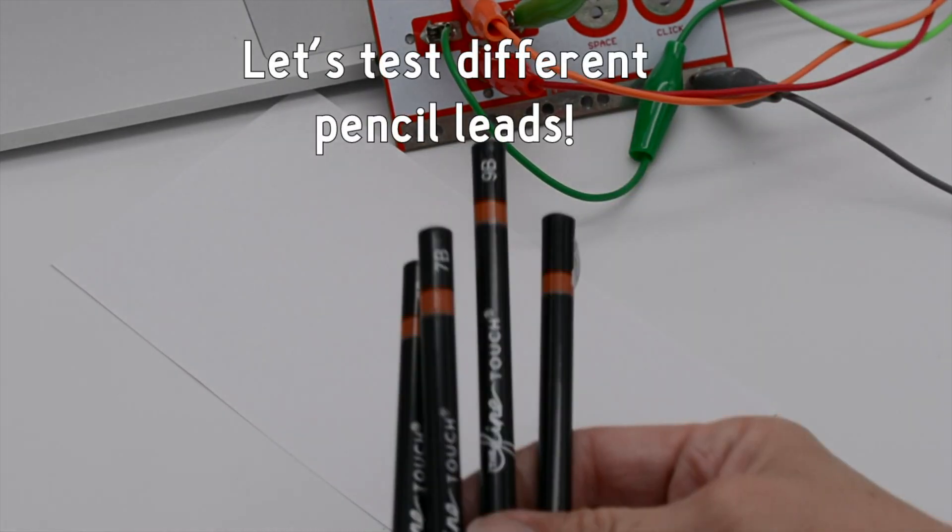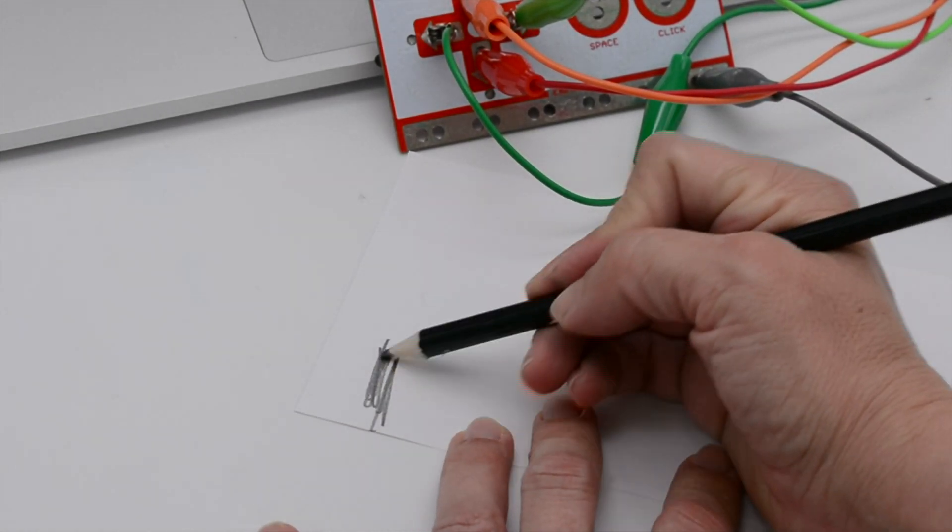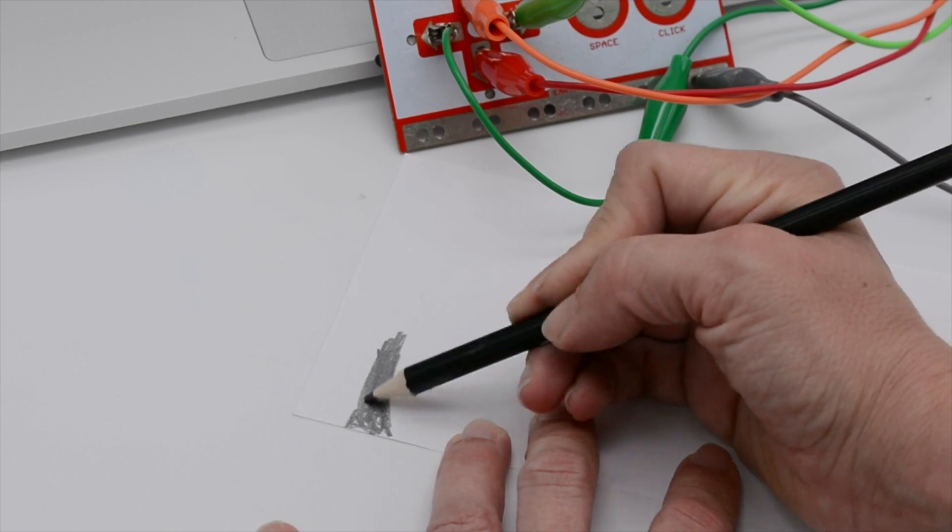Okay, one last experiment. We're going to test different pencil lead types. These are all pencils from a different artist set. We have 2B, 4B, 6B. I'm going to draw a sample and label each one.